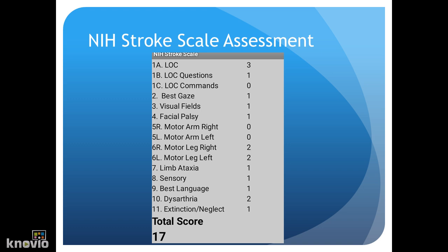For 1B, we're going to ask the patient their current month and their age. If they answer both of these questions correctly, they'll receive zero points. For 1C, we ask them to blink their eyes and squeeze our hands. If they can perform these tasks, they'll get zero points.